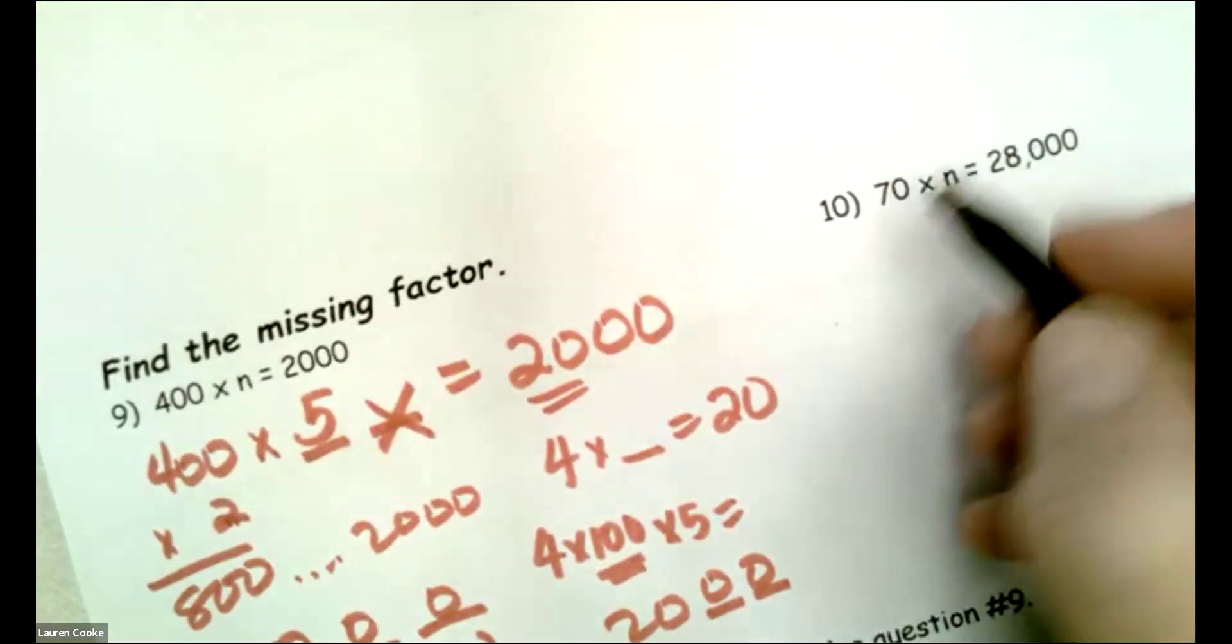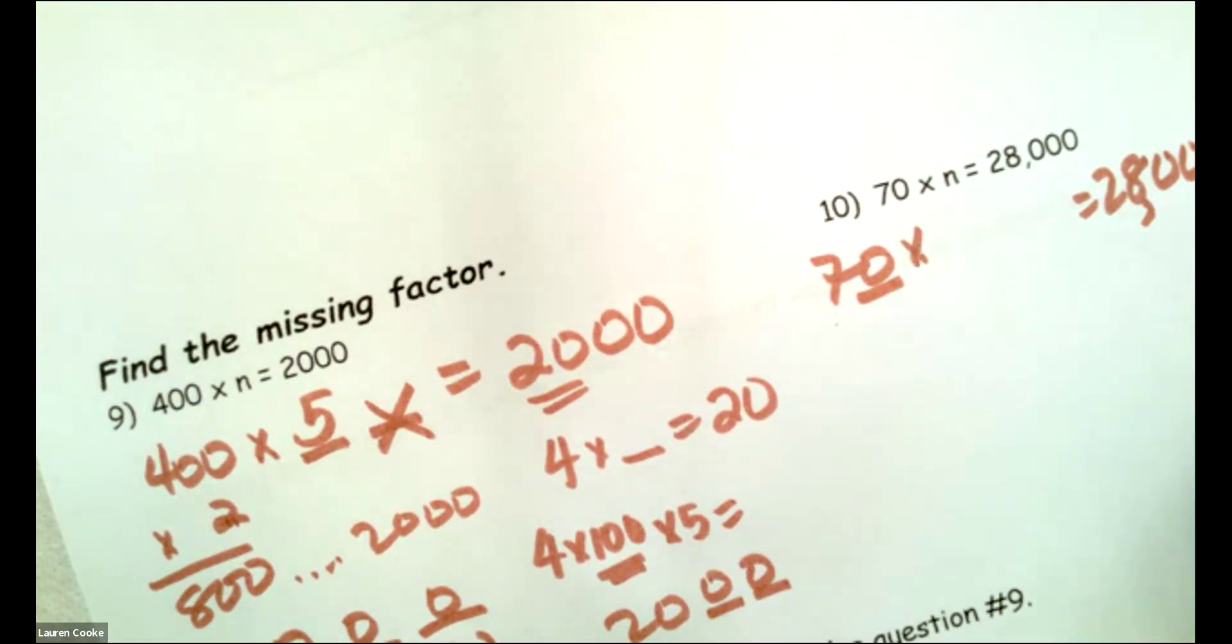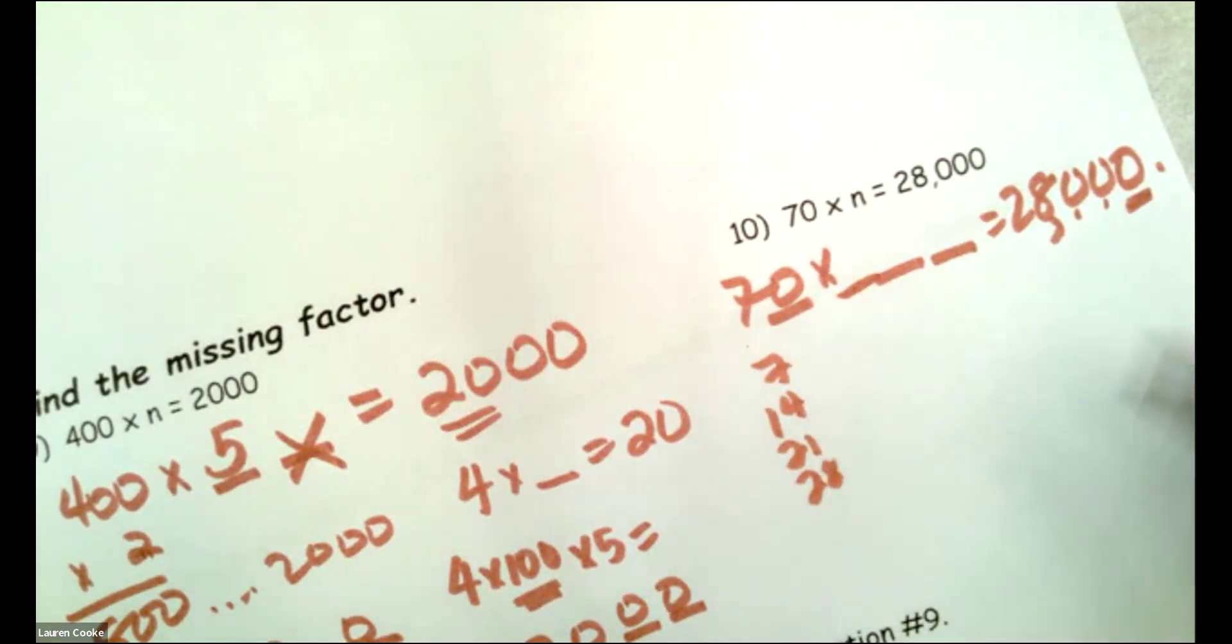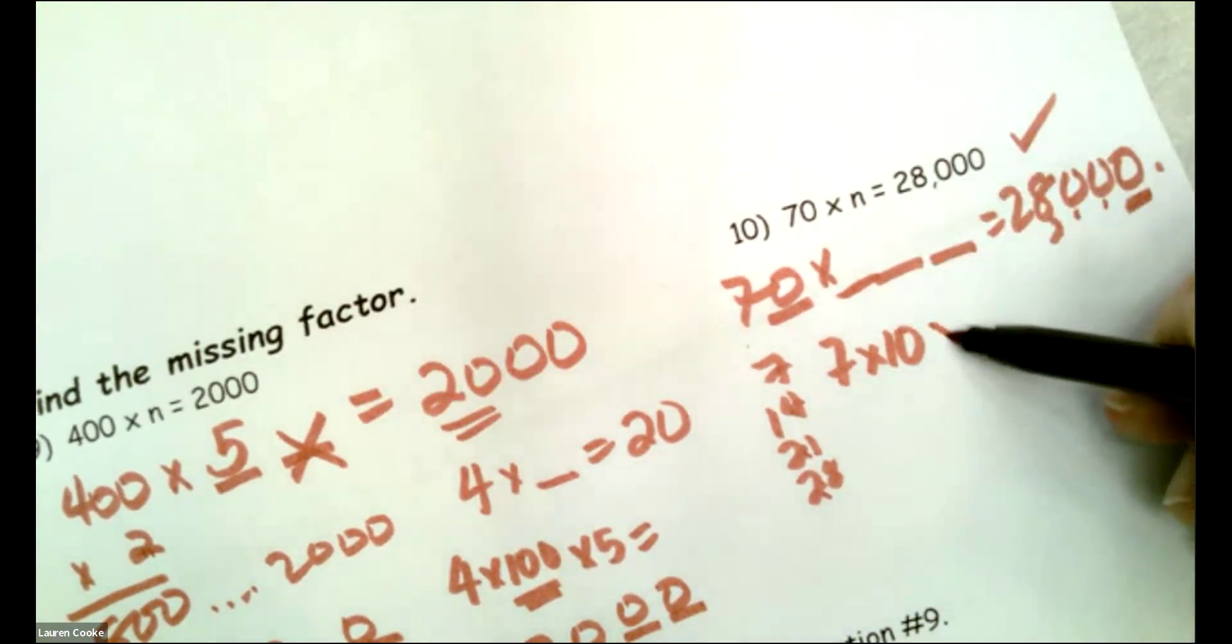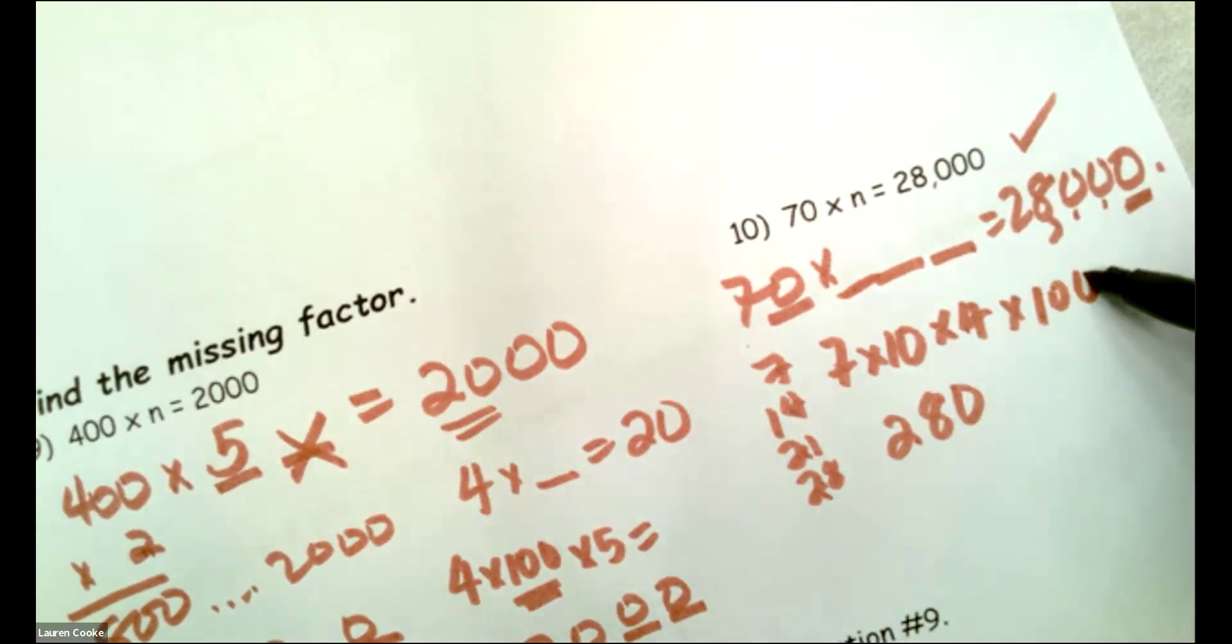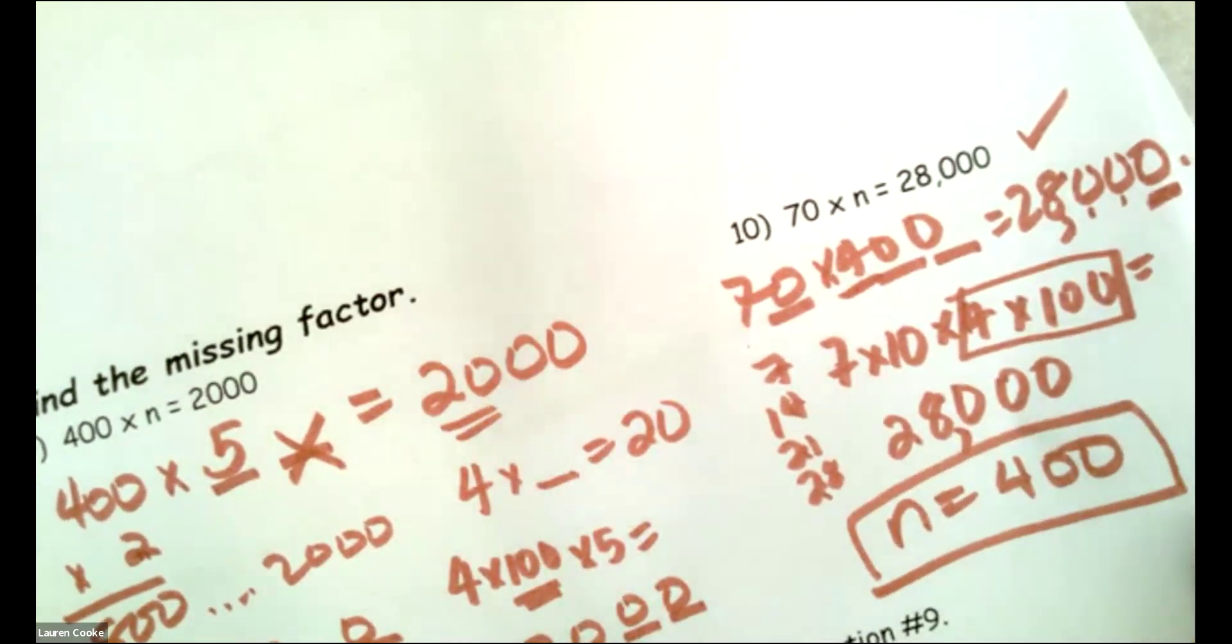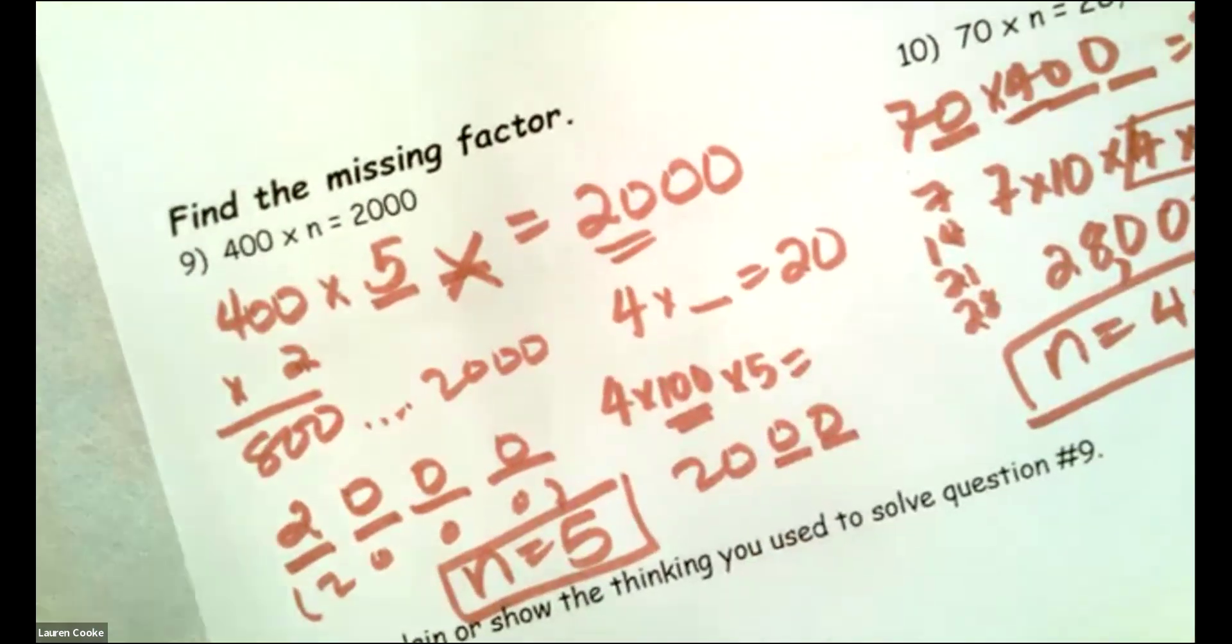Same thing for number 10. I have to have 70 times something equals 28,000. So I already have 10. I'm going to need two more digits and then like a non-zero digit there. So I'm just thinking of my multiples of 7, 14, 21, 28. Yes. So that's going to be seven times four. So if I already have seven times 10, I can have times four. And then what do I need? So that's my 28 and one zero. I need two more zeros. And so it's going to be 400. N equals 400 because I'm asked to solve for N. Find the missing factor. And over here, N equals five. Make sure that you're answering the expression there.